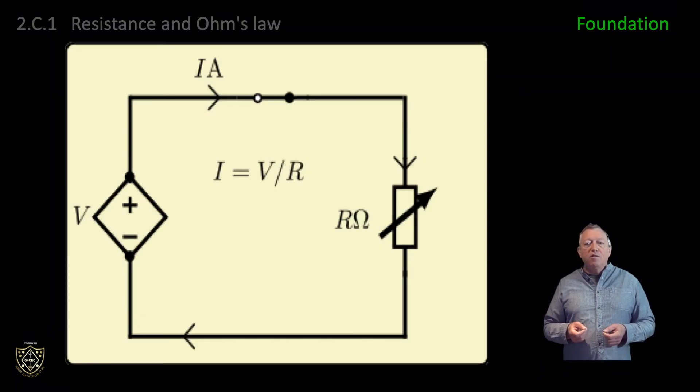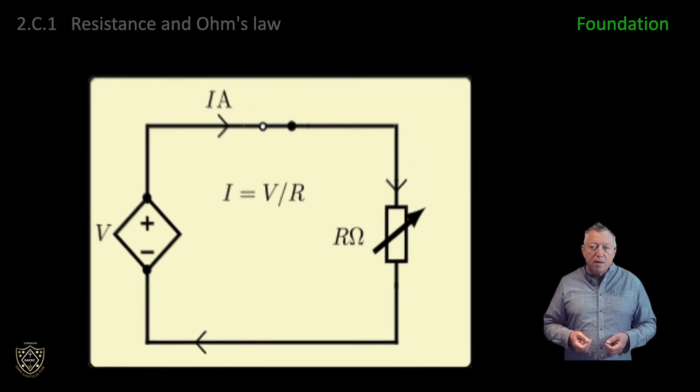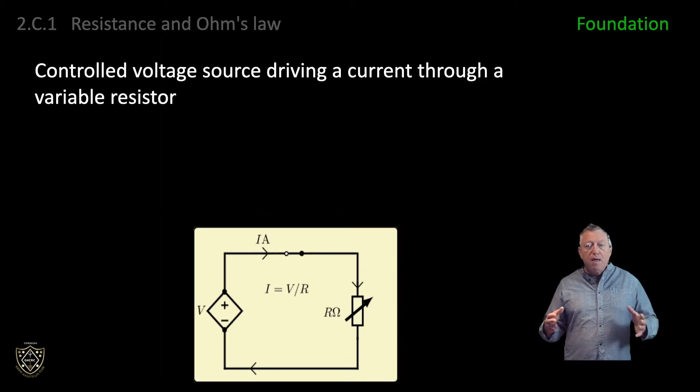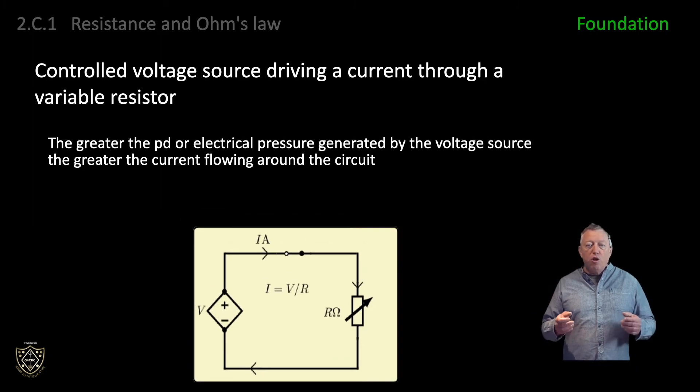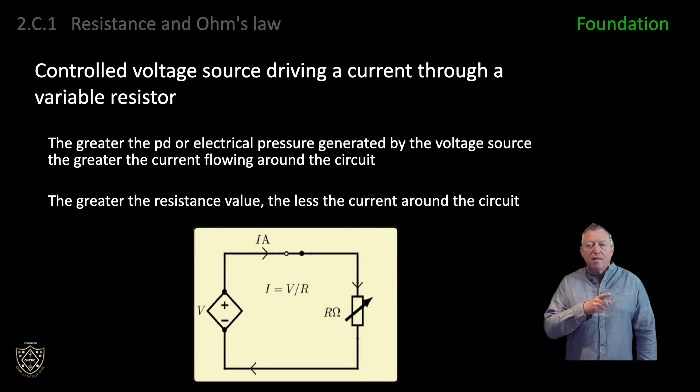The schematic in the graphic shows a controlled voltage source driving a current through a variable resistor. The greater the PD or electrical pressure generated by the voltage source, the greater the current flowing around the circuit. Conversely, the greater the resistance value, the less the current flowing around the circuit. Note, the symbols for controlled voltage source and variable resistor are not required for the foundation exam.